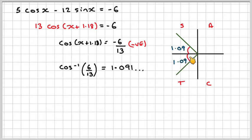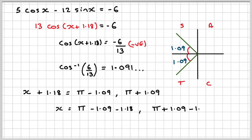Therefore our possible answers for x plus 1.18 is going to be pi minus 1.09 or pi plus 1.09. In order to find x, we need to take 1.18 from both angles. Taking our calculator out, we'll get 0.872 or 3.05.